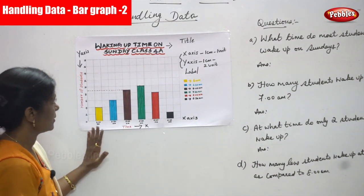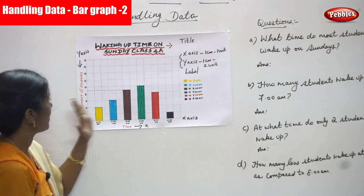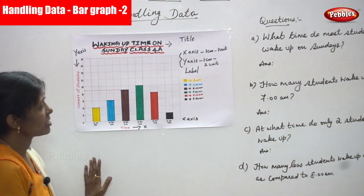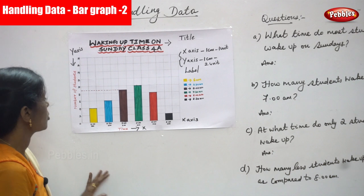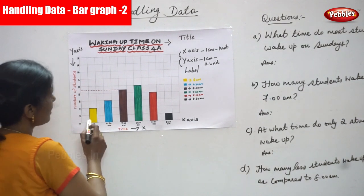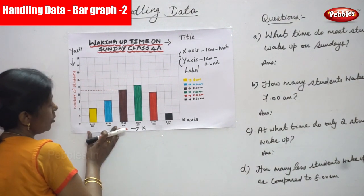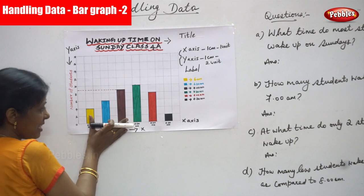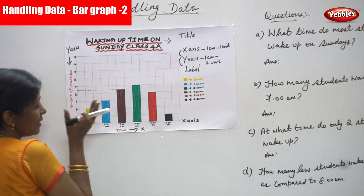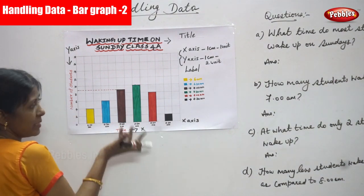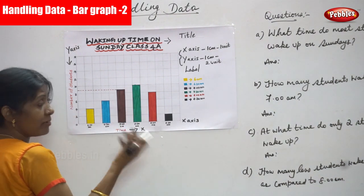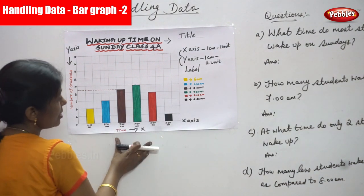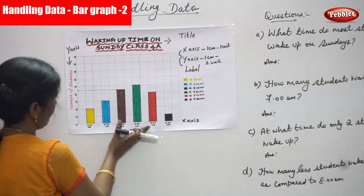Now look at the bar graph very clearly. Now understand the information also very clearly. The bar graph always represents information. So to represent information clearly, we are using a bar graph, pictograph, or some other circle graphs. Now we are going to see only the bar graph here.